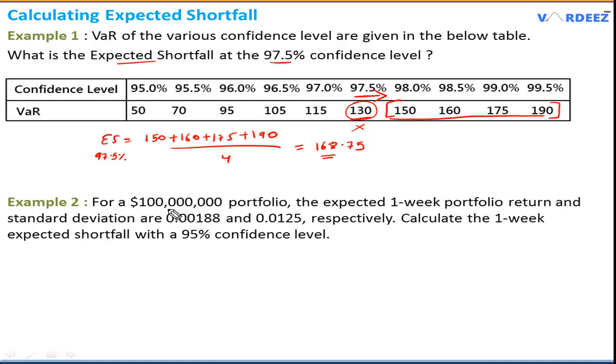This proves that expected shortfall will be greater than VAR. Now let's look at a formula-based question. For a 100 million dollar portfolio, the expected one-week return and standard deviation are given - this is the mean μ and this is the standard deviation σ. Calculate the one-week expected shortfall with a 95% confidence level. When we're not given the VARs in a table, we can't simply take the average, so we calculate expected shortfall using this formula.